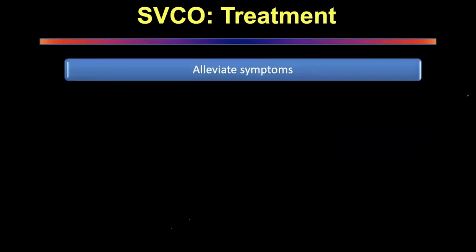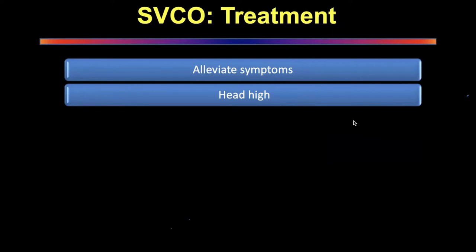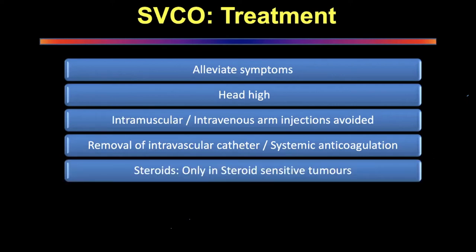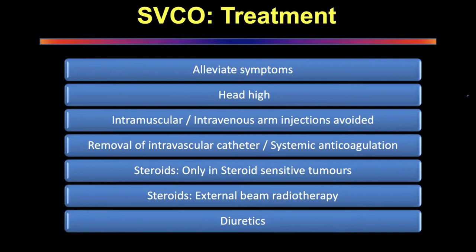Treatments to alleviate symptoms: keep the patient head-high. Intramuscular and intravenous injections in the arm are to be avoided, particularly when back pressure is high. All intravascular catheters present in the body should be removed as soon as possible when thrombosis symptoms appear. The patient must be put on systemic anticoagulation therapy. Steroids are only used in steroid-sensitive tumors and certain other situations. Diuretics can be used to reduce preload and reduce pressure on the heart.